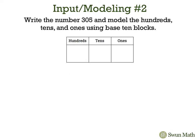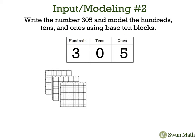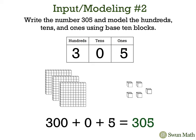Now we're going to write the number 305 and model the hundreds, tens, and ones using base 10 blocks. We have three hundreds, zero tens, and five ones. Using our base 10 blocks we would have three hundreds, zero tens, and five ones. We have 300 plus zero plus five, which gives us the number 305.